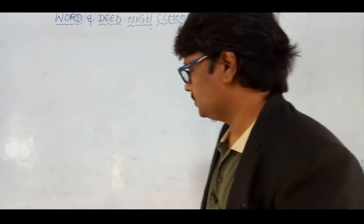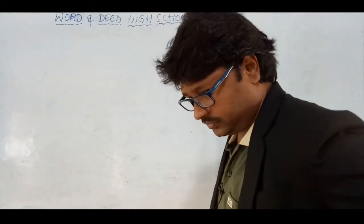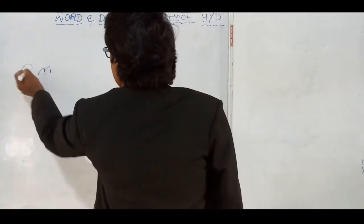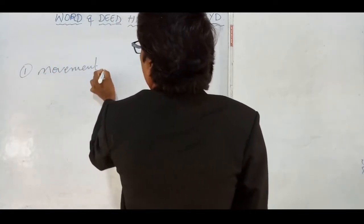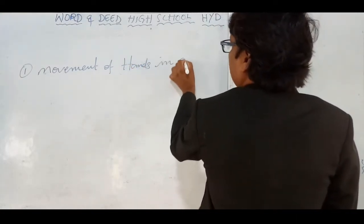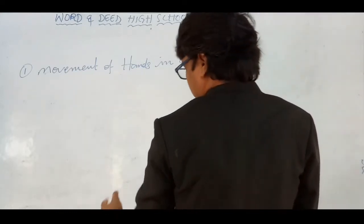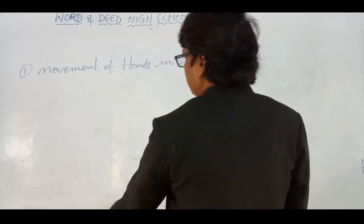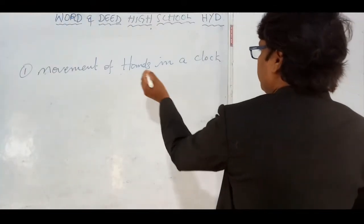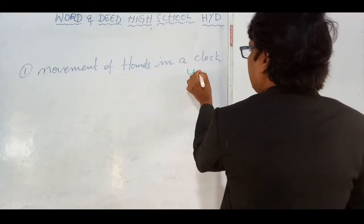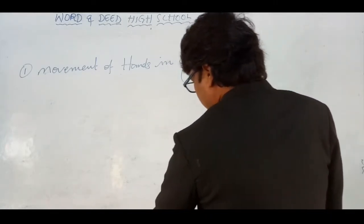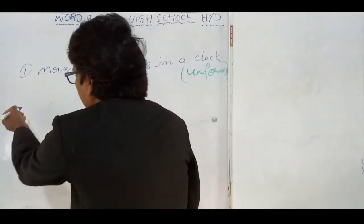First statement: movement of hands in a clock. Can you see what kind of motion the movement of hands consists of? Obviously, the movement of hands in a clock consists of uniform motion.